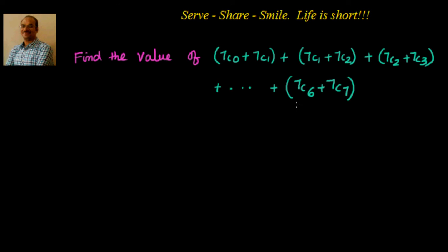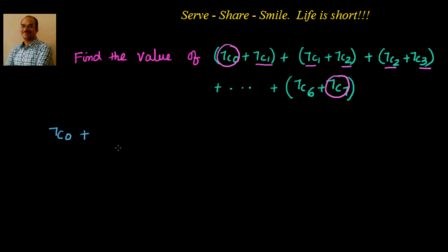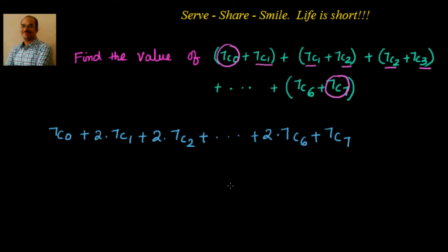First, let's understand what is given. We see that 7C1 is repeating 2 times, 7C2 is repeating 2 times, 7C3 is also repeating. So other than 7C0 and 7C7, the remaining terms all repeat 2 times. So what is given to me is: 7C0 plus 7C1 plus 2×7C2, like that up to 2×7C6, and then 7C7.